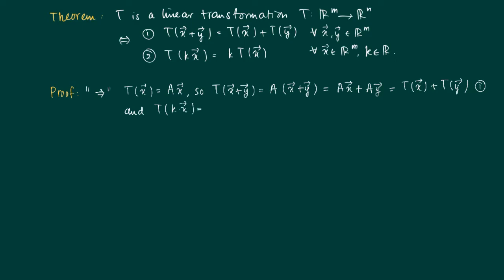Now take an arbitrary vector x and the scalar k. Then T(kx) equals A times kx, and we can take out the scalar, and then we can get k times Ax is k times the image of the vector x. So this shows property 2.